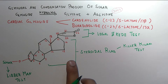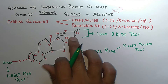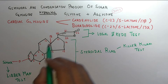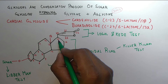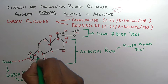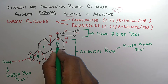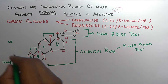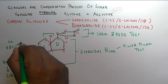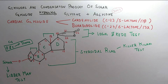This is the common structure of the cardiac glycoside. There are two types — cardinolides and bufordinolides. Cardinolides have a 5-membered lactone ring, and bufordinolides have a 6-membered lactone ring at the 17th position. The structure has rings A, B, C, and D, where A/B and C/D are in cis configuration, and B/C are in trans configuration.